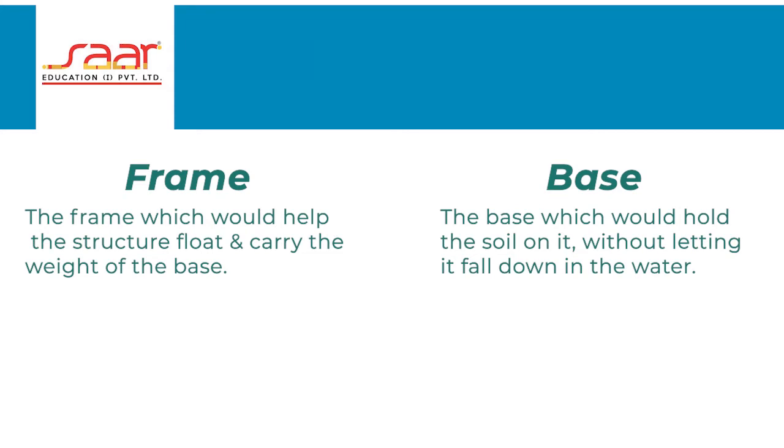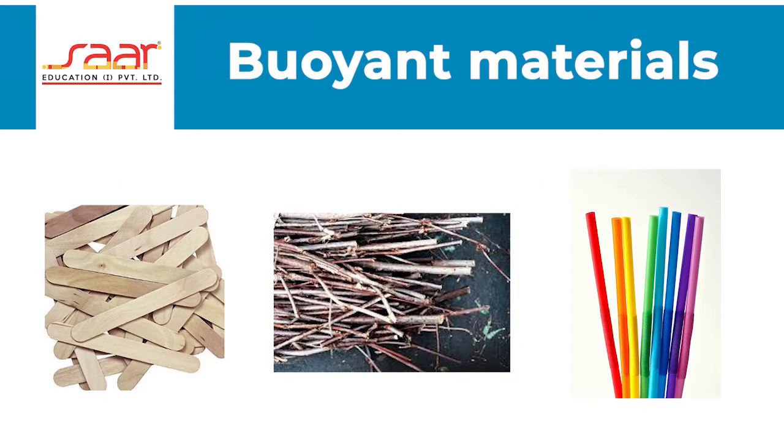Let us first make the frame of our floating raft. The materials that we can use are craft sticks, twigs or branches, or straws. All of these items are buoyant, that is they float. We will either use the craft sticks or the twigs for this raft. You can try different materials to see what suits this purpose.